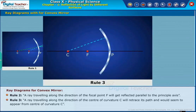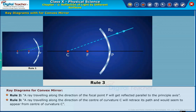Rule three: a ray traveling along the direction of the center of curvature C will retrace its path and would seem to appear from the center of curvature C.